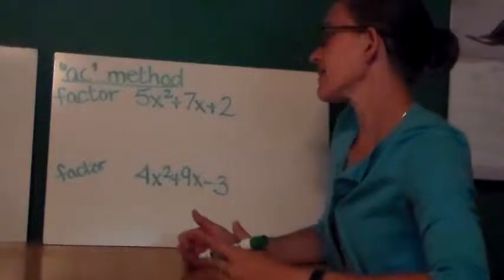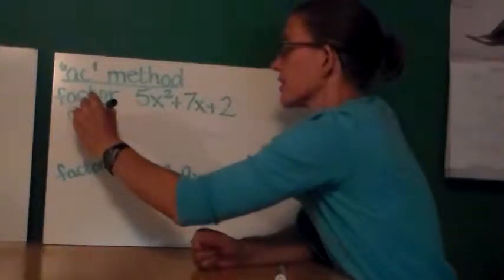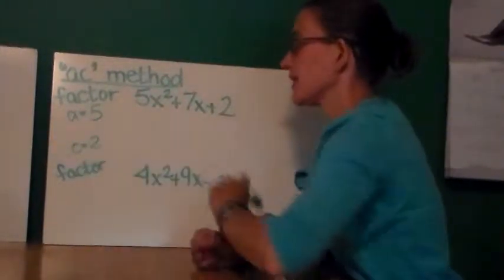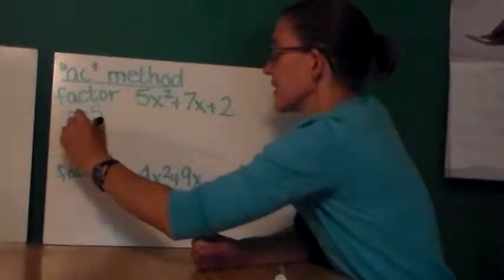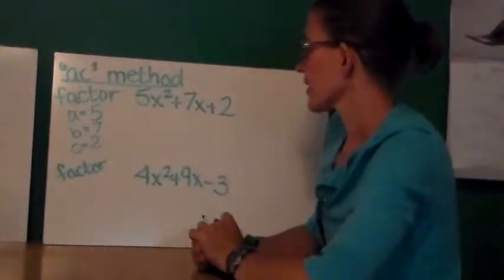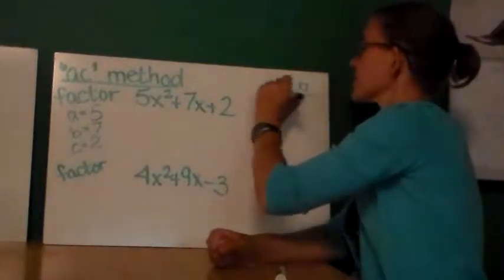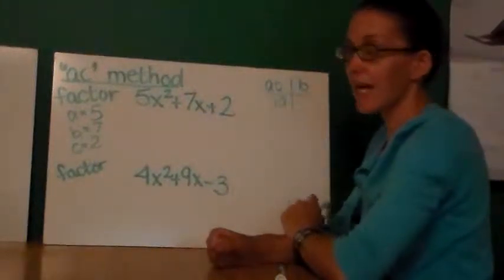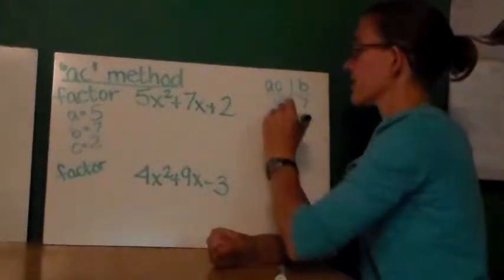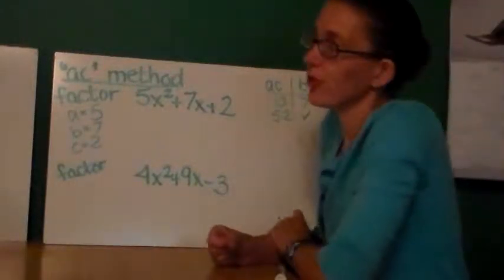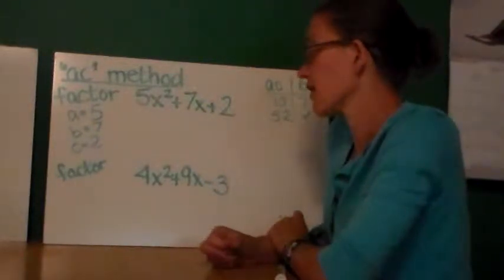The AC method refers to the fact that we're going to multiply the first and last terms together. In this, A is 5, C is 2, B is 7. So I'm going to ask myself, what are two numbers that multiply to equal positive 10 and add to equal 7? Well, let's say, hey, 5 times 2 adds up to 7. If you weren't so lucky as me, you can check a variety of numbers. With 10, fortunately, there's not a lot of choices.